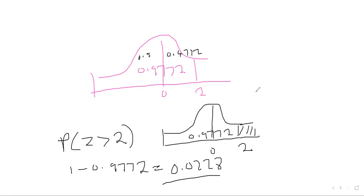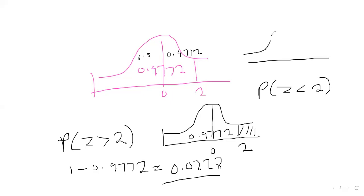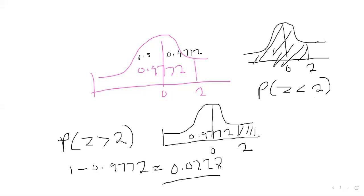If the researcher asks: find the probability that z is greater than 2. Greater means shade to the right. We know from the left to z = 2 is 0.9772. To find the shaded area on the right, subtract: 1 minus 0.9772 = 0.0228. If asked for less than 2, the answer is directly 0.9772 — no subtraction needed.